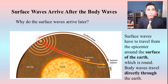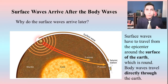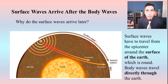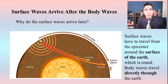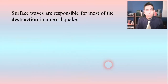Surface waves don't travel from the focus — they travel from the epicenter, which is on the surface of the earth, and they have to travel around the surface of the earth. That's why they're called surface waves. Since the earth is round, it takes longer for those surface waves to arrive. They're also slower just because of the way they propagate, so surface waves take a bit longer to reach the place where the earth is going to be shaking.